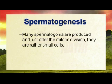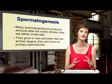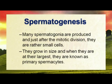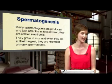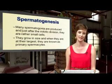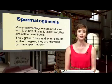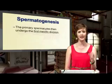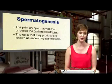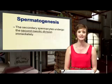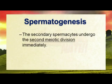These spermatogonia are rather small cells but they grow bigger and bigger. When they reach their largest size we call them primary spermocytes. Now the first meiotic division happens — meiosis is reduction division — so now we start making haploid cells. The primary spermocytes undergo the first meiotic division and the cells they produce are known as secondary spermocytes, which are now haploid, just N.